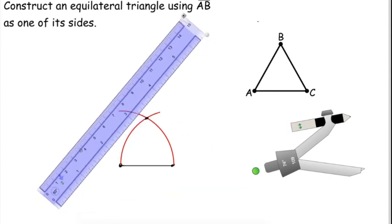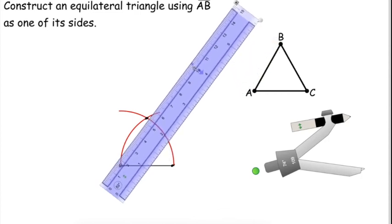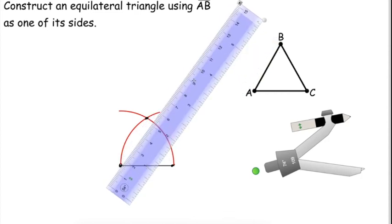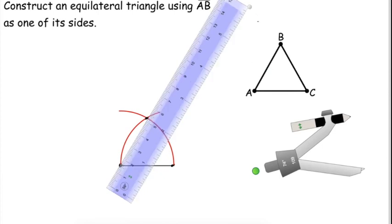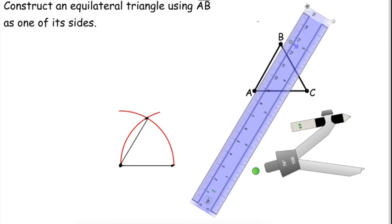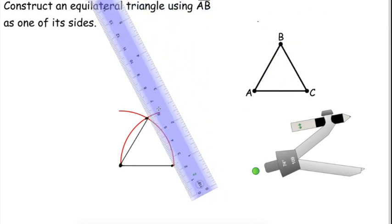So this combines our two techniques of making a congruent line segment and making an equilateral triangle from a given line segment. And then we'll connect the other two points together. And all three sides should be approximately the same length.